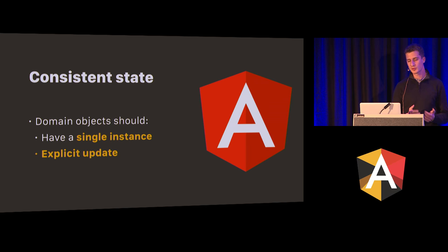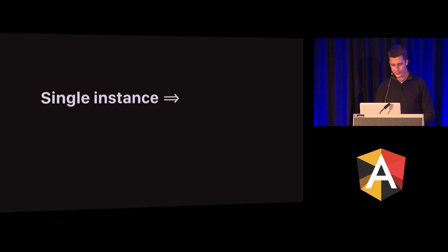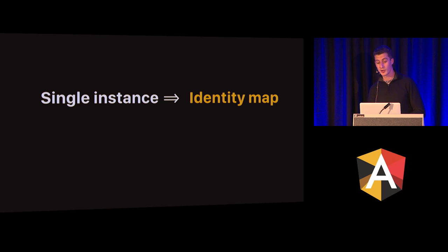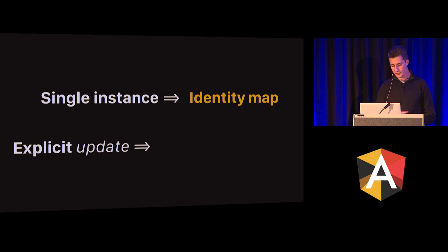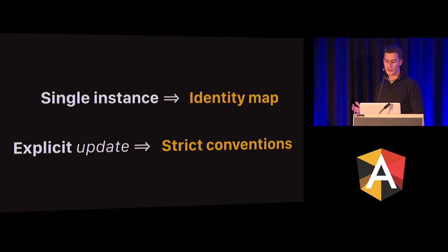If we have a user with ID 1, we want to have only a single instance of this user — not multiple users with ID 1 with different usernames and birth dates, because that would introduce an inconsistent user interface. We can solve this by using an identity map, a pattern defined by Martin Fowler, which we are going to apply in a similar way but with slightly modified implementation details. We also want to have explicit updates of the state with very strict conventions. A pattern already well-recognized that follows most of these things is Redux.